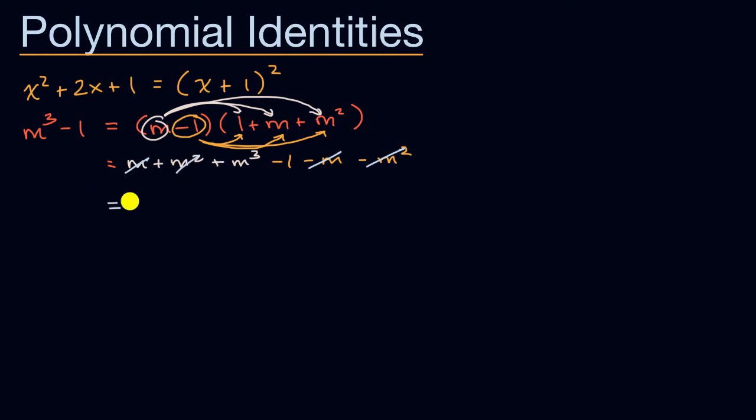And so we are going to be left with m to the third power minus 1. Now clearly, m to the third power minus 1 is going to be equal to m to the third power minus 1 for any value of m. These are identical expressions. So this is indeed a polynomial identity.